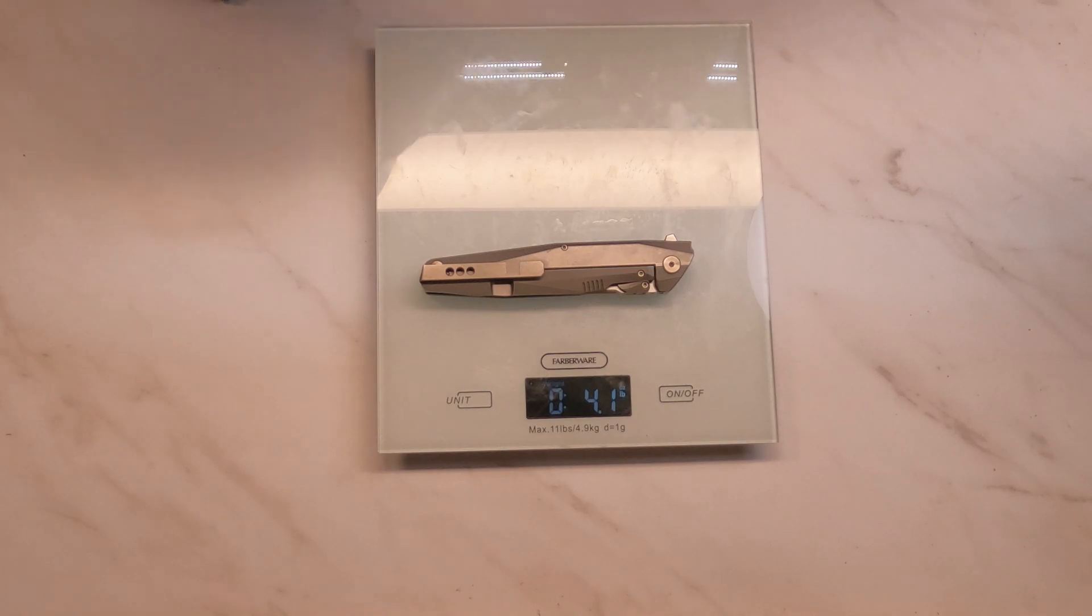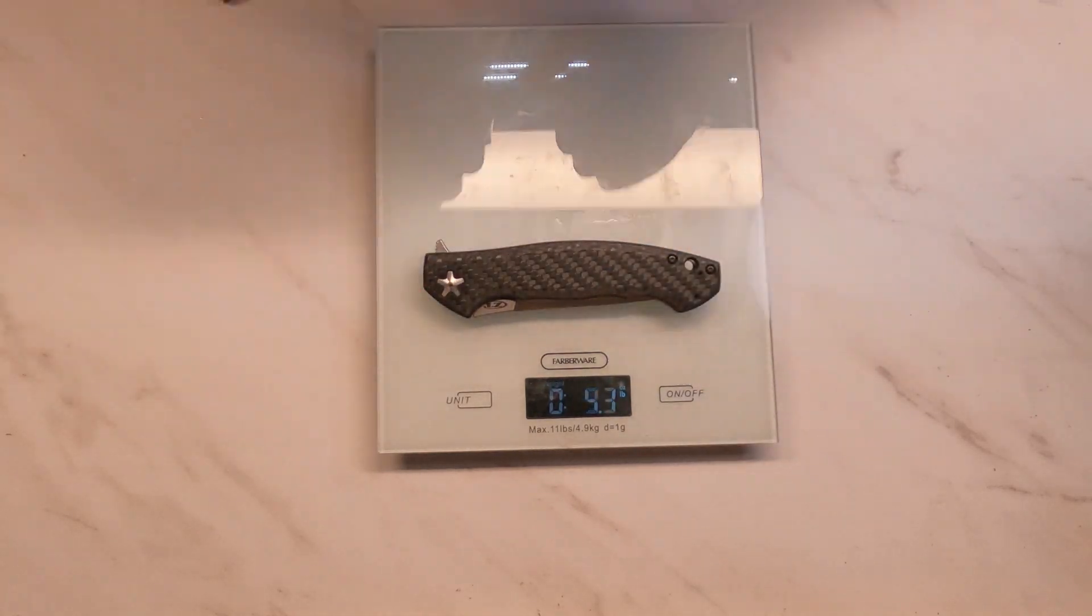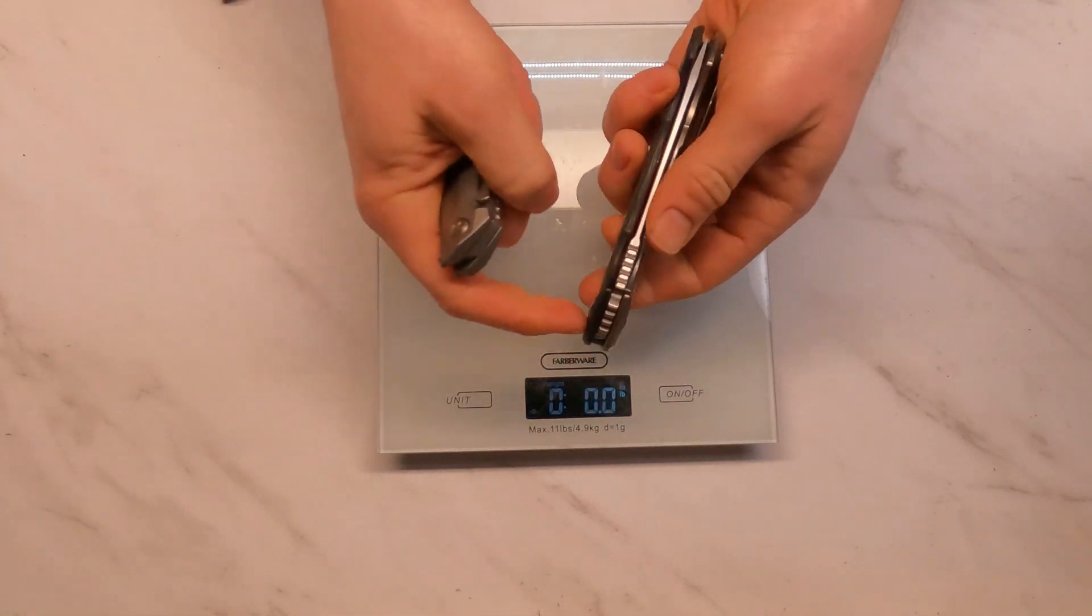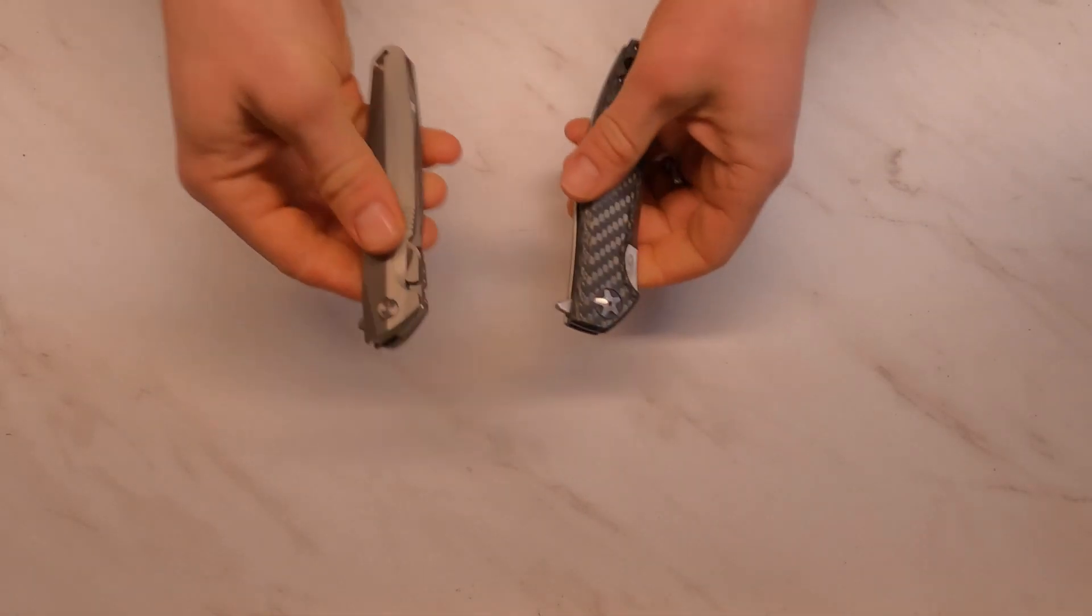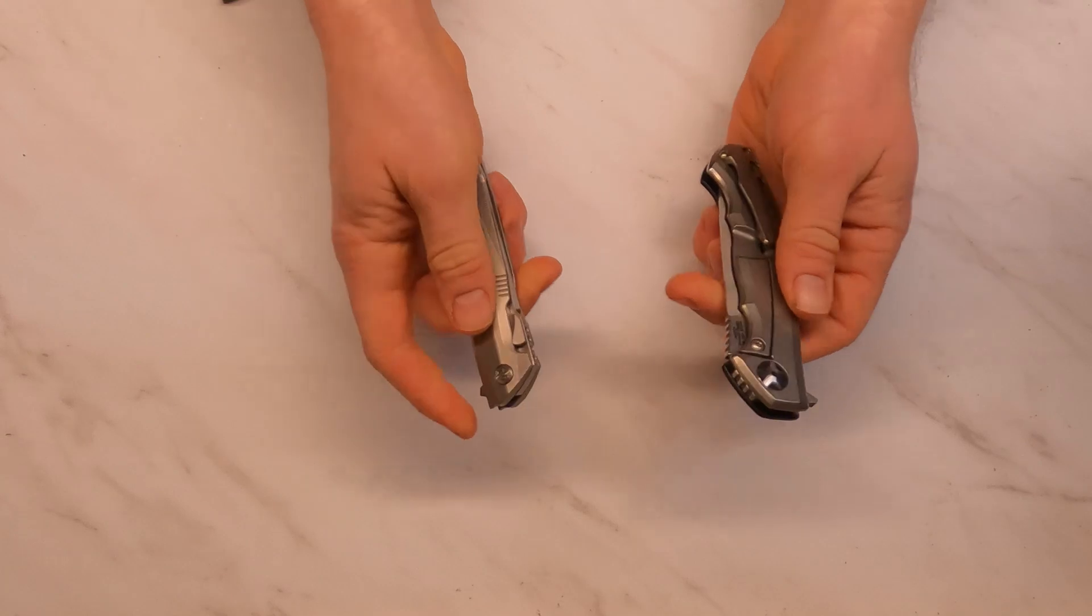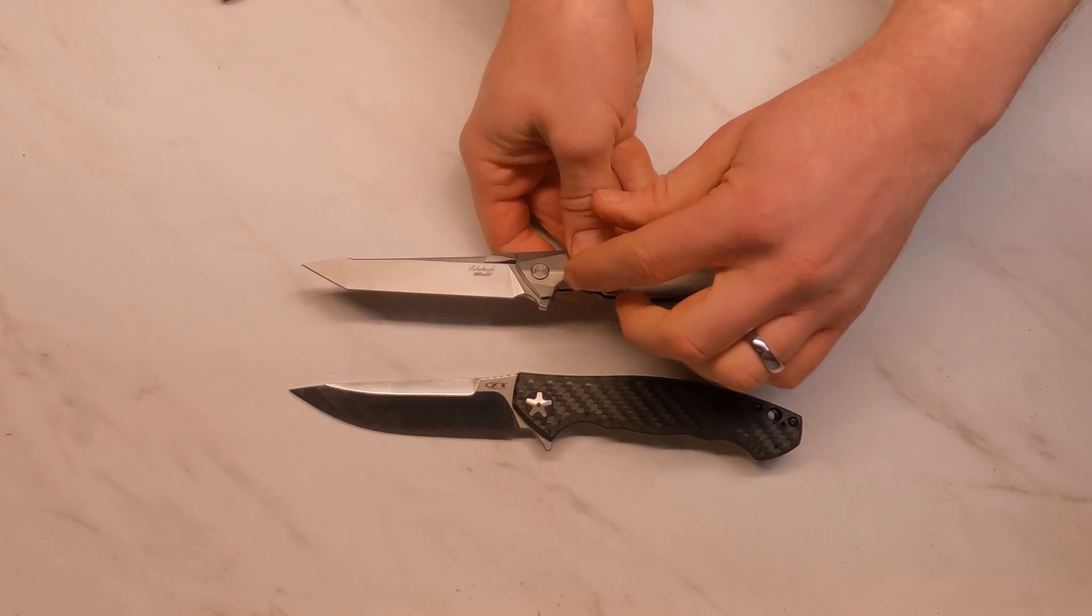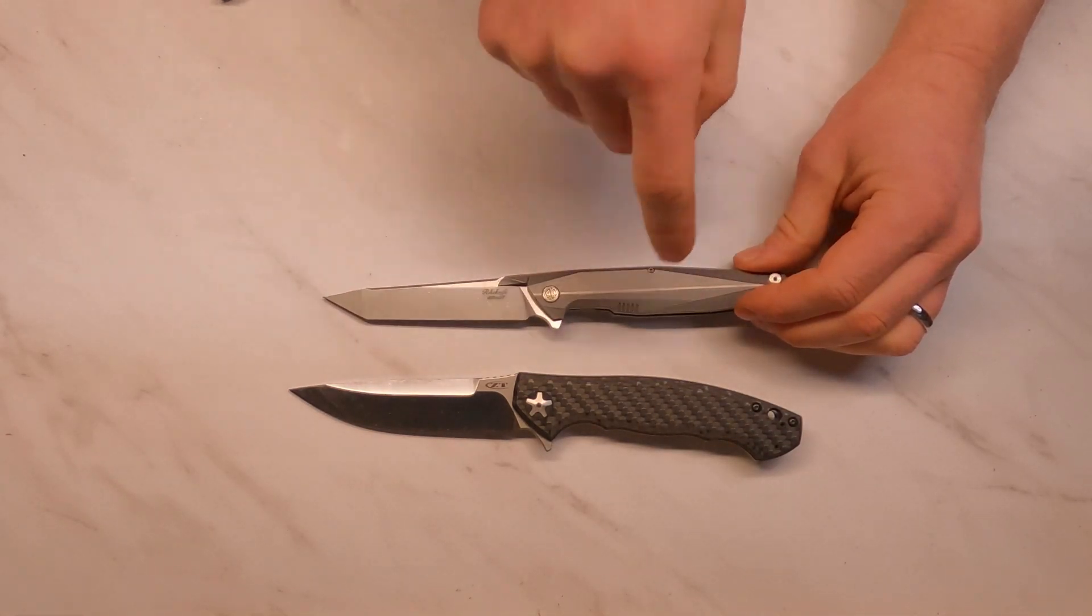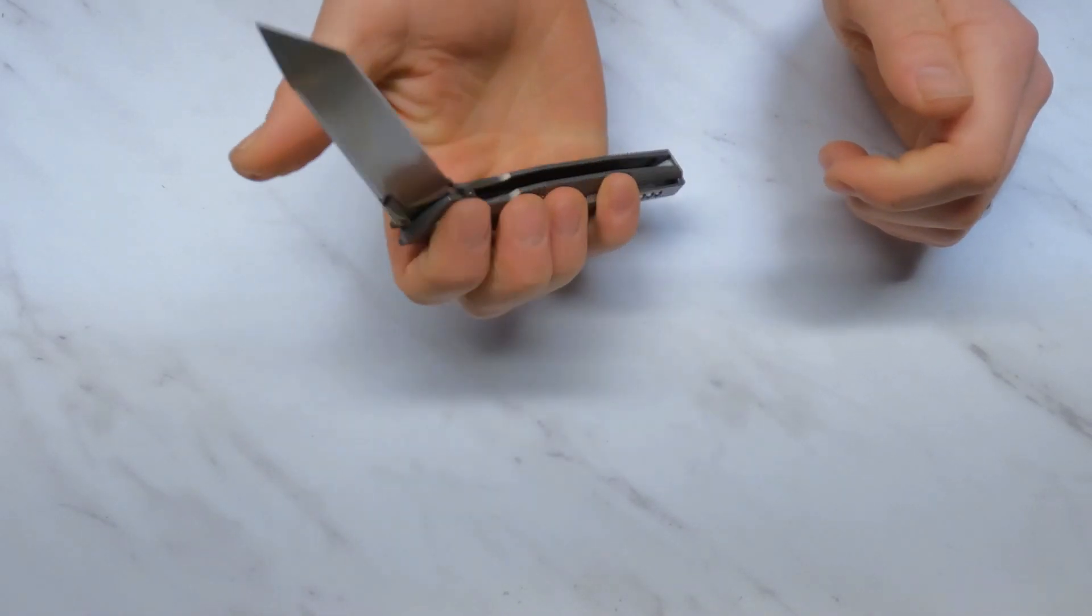Weight on this is 4.1 ounces, which you can see is a bit lighter than the 0452 Carbon Fiber, even though this is a slightly larger knife. It's in that size range and right in that weight range even though it's full titanium. So lots of really cool engineering. I will get into the disassembly and then we'll go over conclusions on the knife.